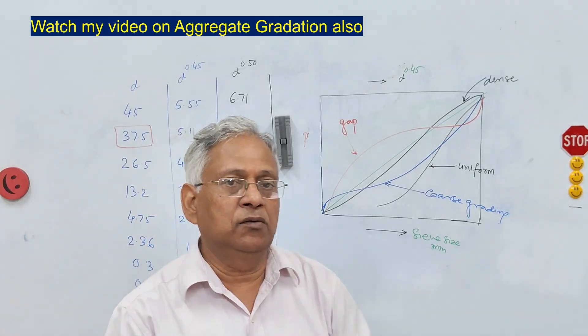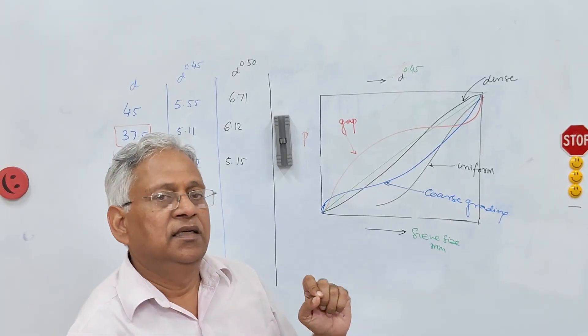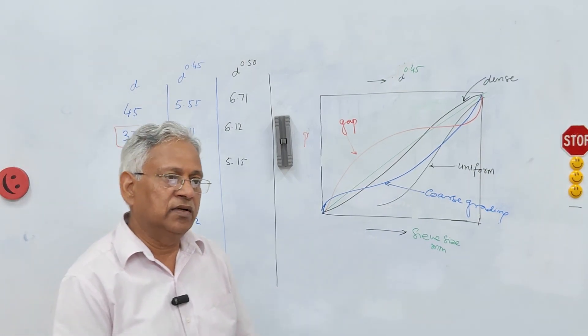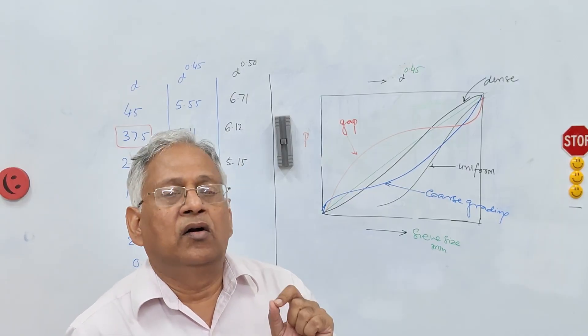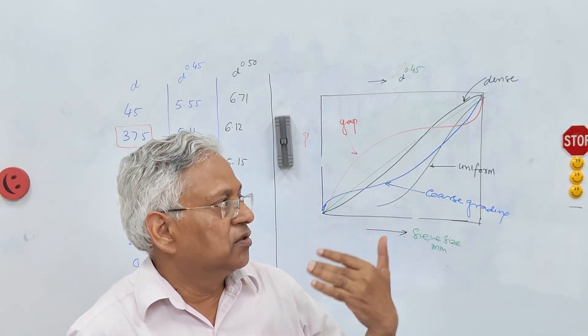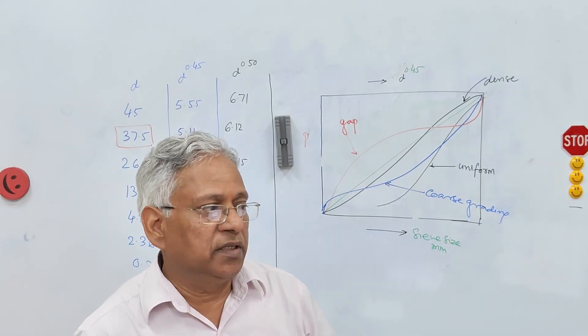So I have told you how to develop this 0.45 curve in asphalt mix design. It offers advantages over the traditional Fuller curve by promoting denser grading or denser aggregate packing which translates to improved stability and reduced air voids.